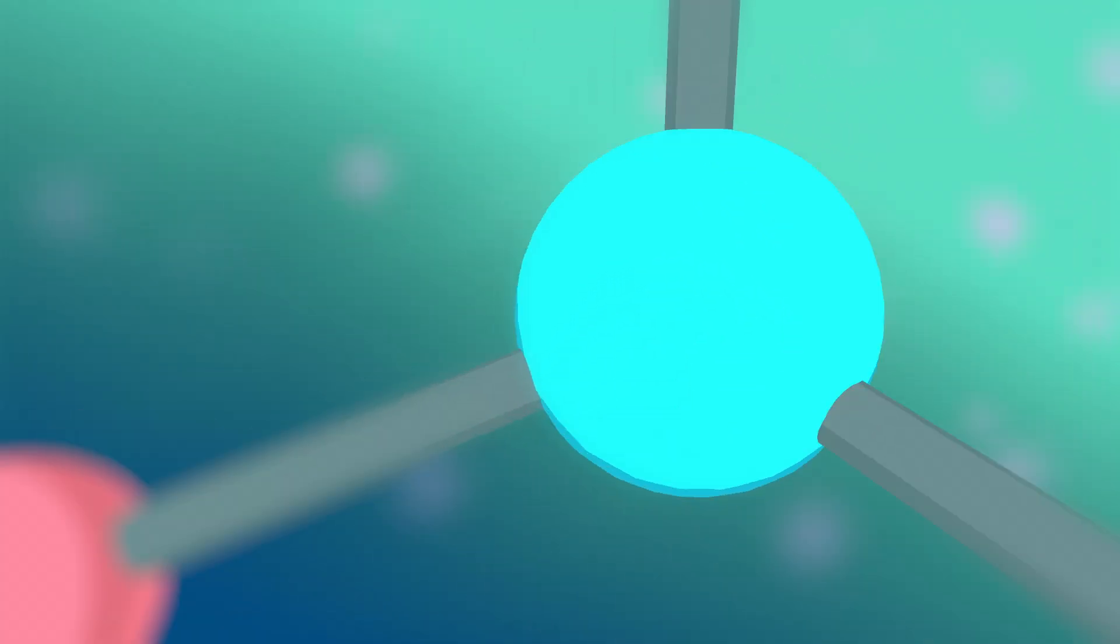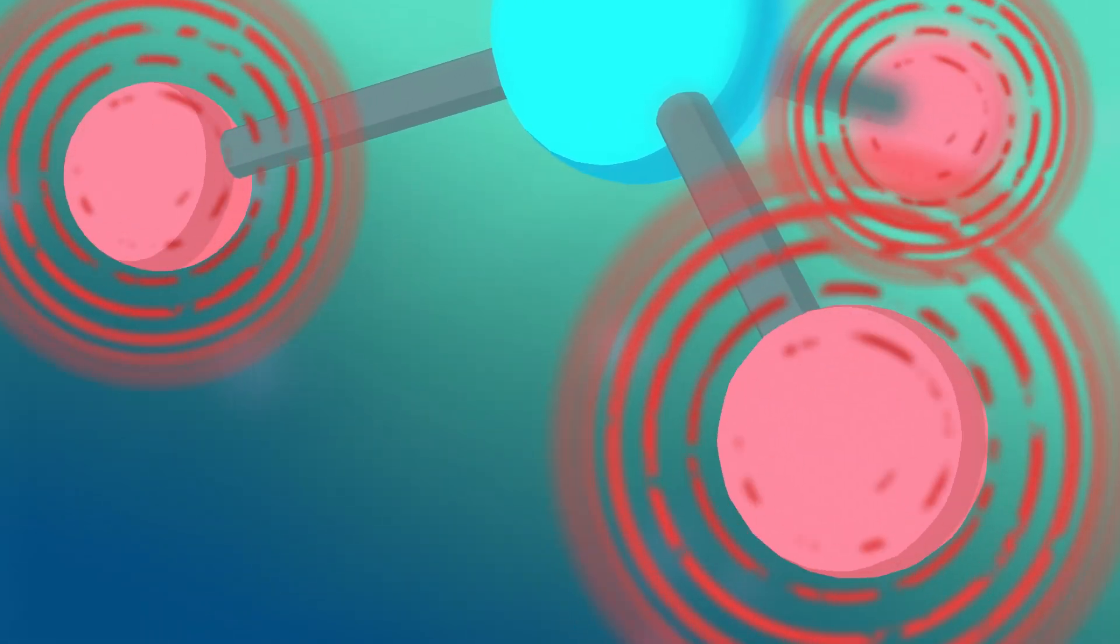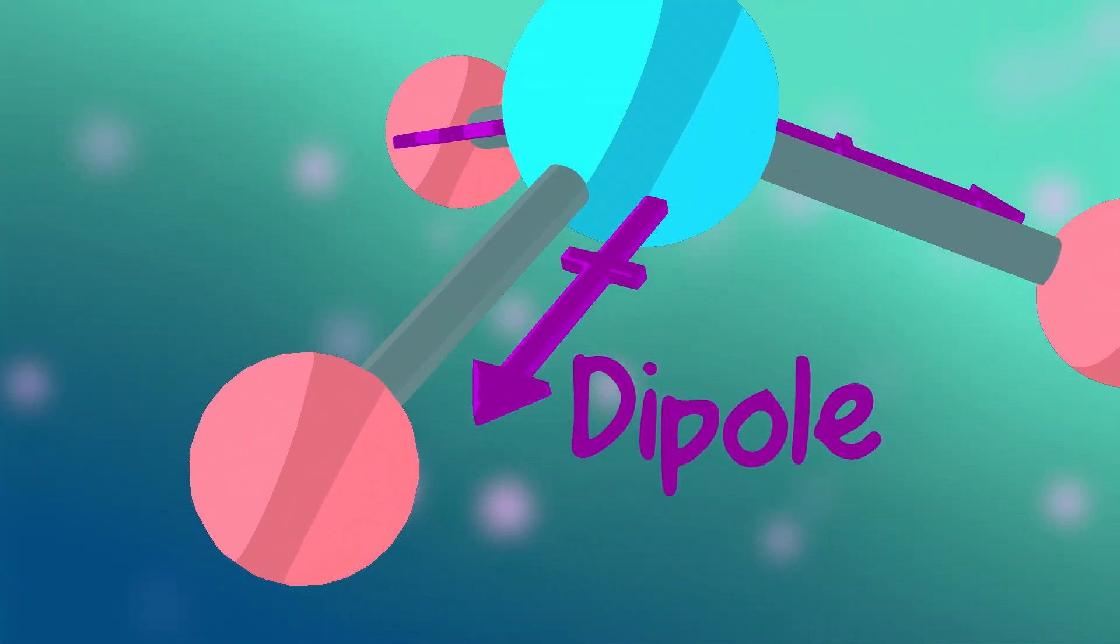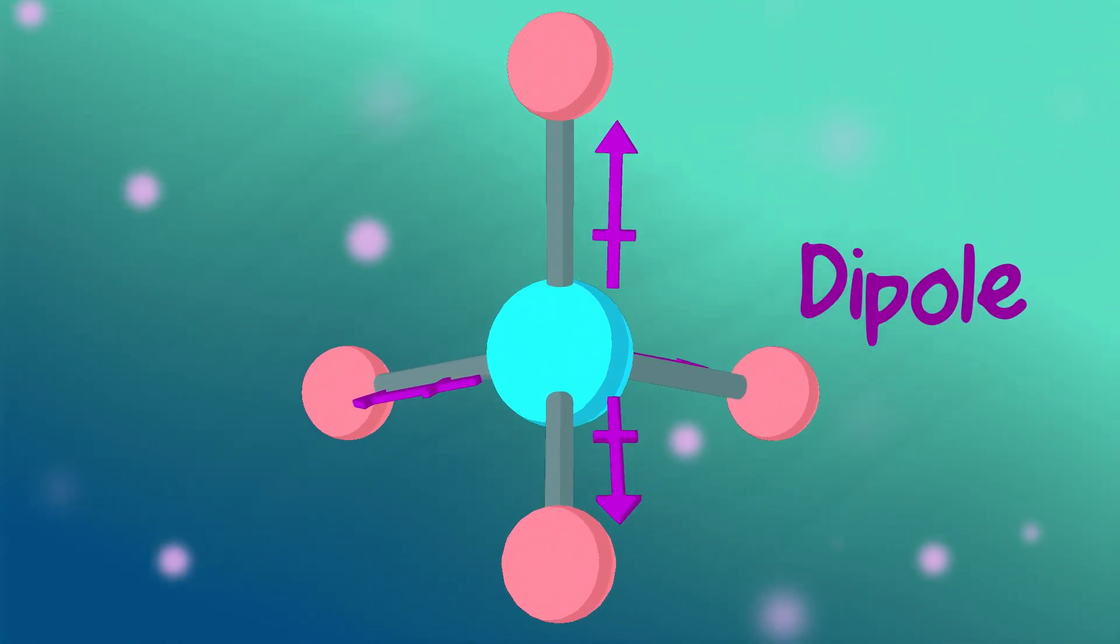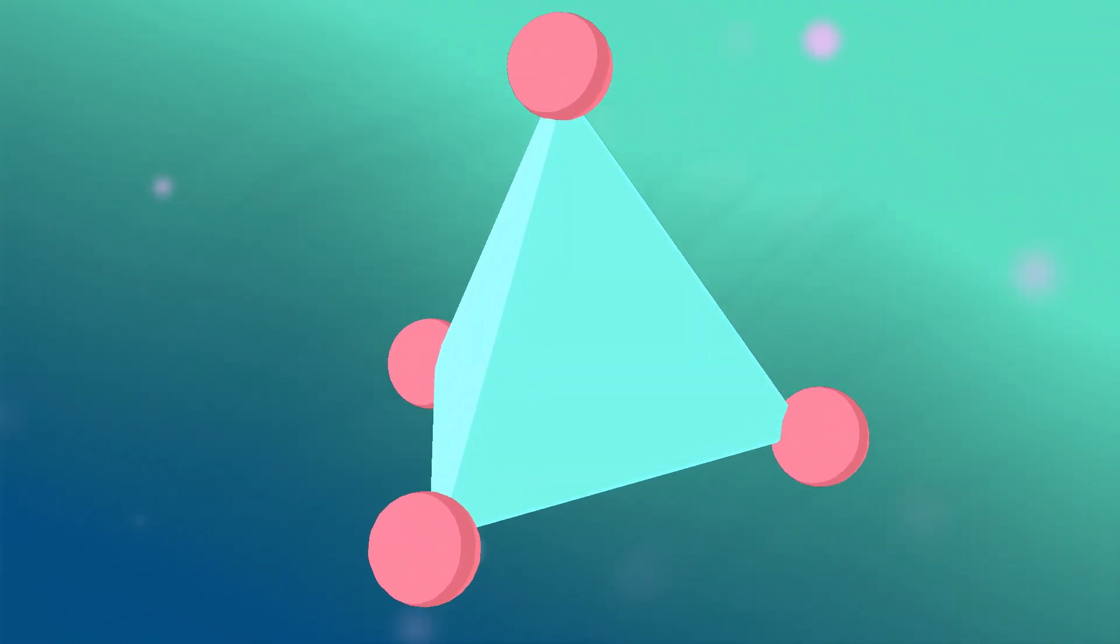Let's look at quartz, a piezoelectric material made of silicon and oxygen. The oxygens have a slight negative charge and silicons have a slight positive, creating a separation of charge or a dipole along each bond. Normally, these dipoles cancel each other out, so there's no net separation of charge in the unit cell.